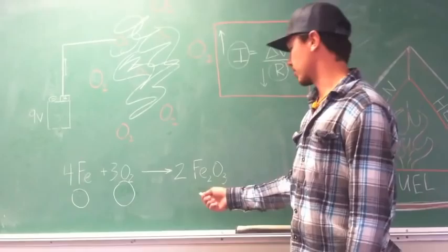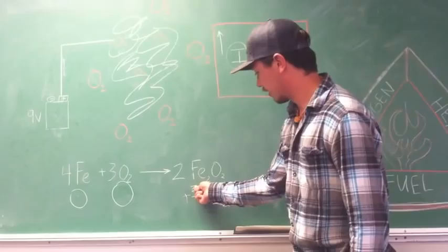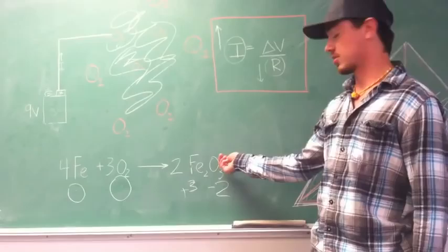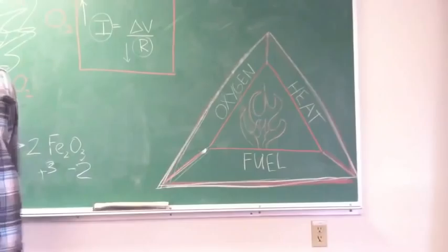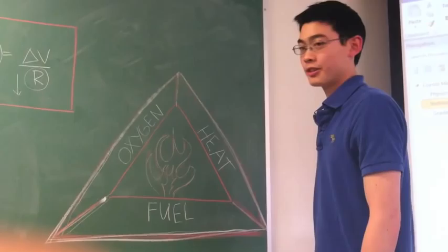So when we come over here into this reaction, the iron loses its electron and donates it to the oxygen. And so at the end of the day, it has a positive 3 oxidation state and oxygen has a negative 2. So the oxygen is what's gaining of the electrons. Now, friend James is going to talk about how we make this into fire.